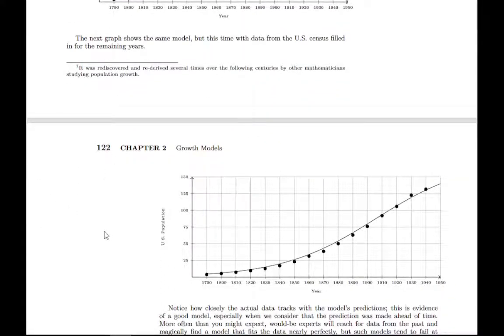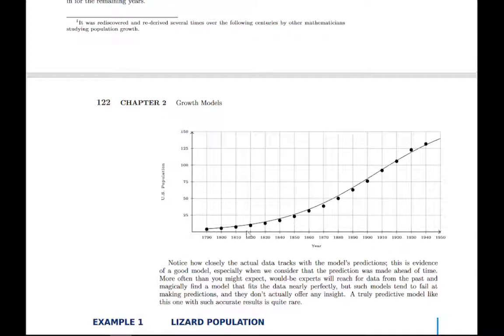And basically, the person who discovered this used it to predict populations out about a hundred years, which is pretty dramatic, and got pretty good results by using this logistic model. So it's pretty impressive that we're able to do that.